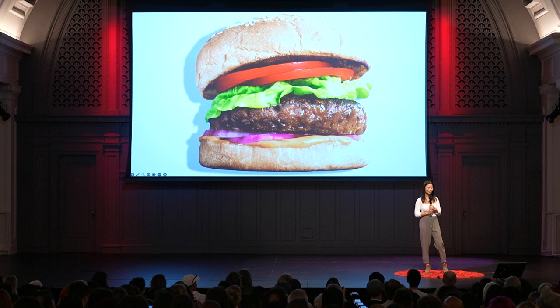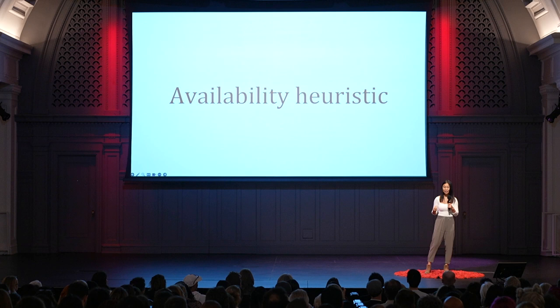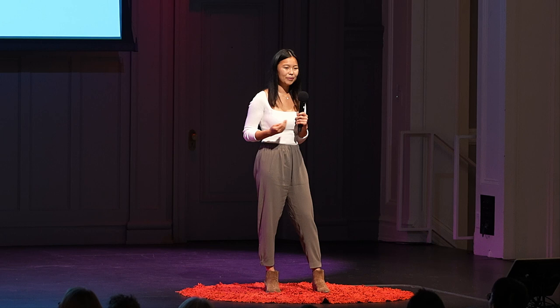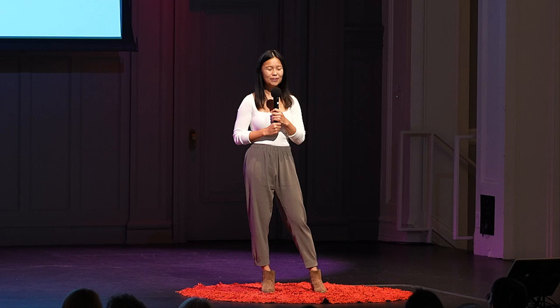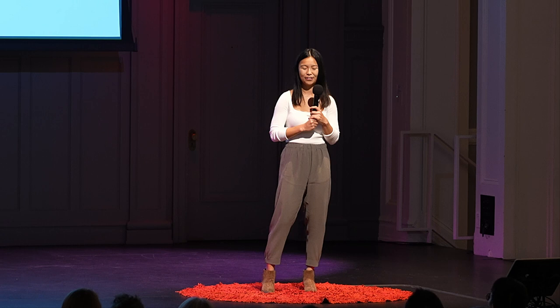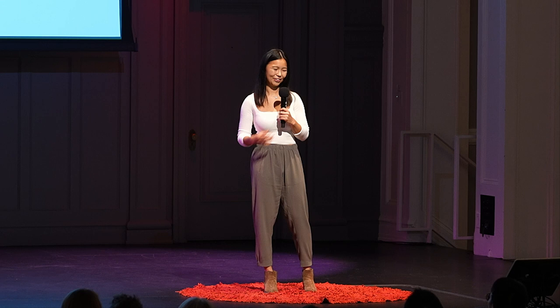The first principle is the availability heuristic. The availability heuristic says that when we make decisions, we tend to make them based on the information we remember most recently — that can include information from a day ago or a week ago. It's probably why we don't listen to our parents half as much as we should. So the way you use the availability heuristic is pretty simple: just tell your friends, 'I think we should go to a burger restaurant,' and list a couple of reasons — it's cheap, it's convenient.